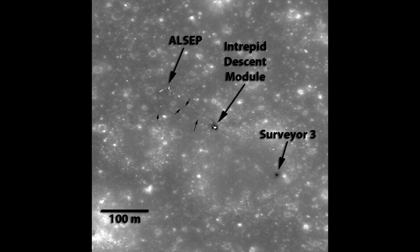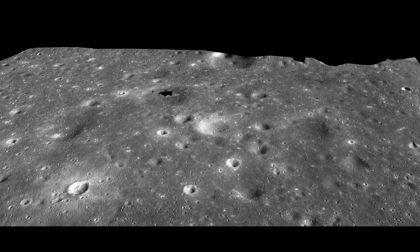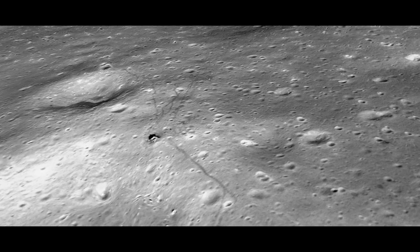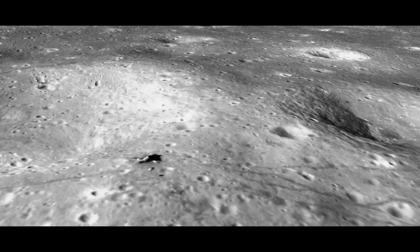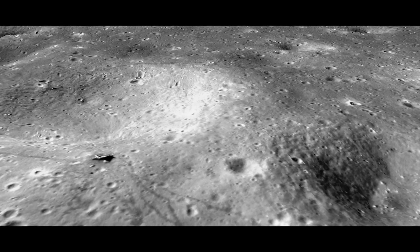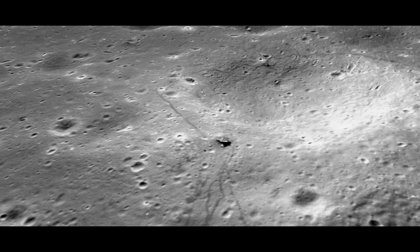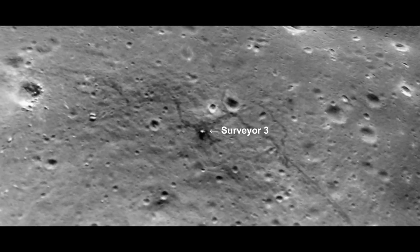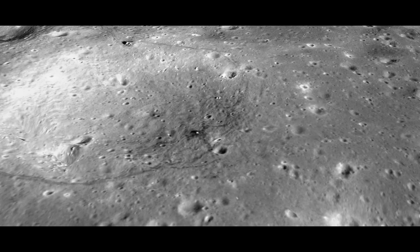The Lunar Reconnaissance Orbiter has been mapping the moon since 2009. It has captured images of all the Apollo landing sites in enough detail to see the spacecraft and tracks left by the lunar rovers and astronauts walking on the surface. Using images from multiple passes over the Apollo 12 site, I was able to create this 3D model. It clearly shows the lower stage of the lunar lander, the nearby Surveyor 3 lander, one of the instrument packages left on the surface, and the tracks made by the lunar rover.